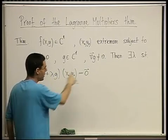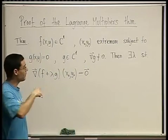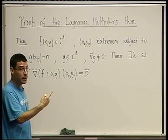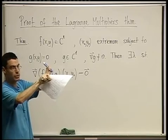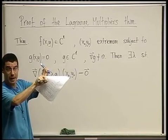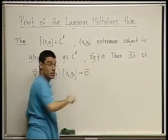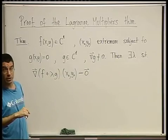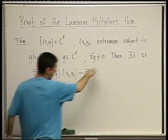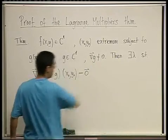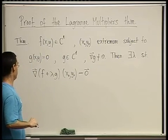We didn't mention this when we discussed the geometric meaning. Remember the geometric drawing where the two gradients were parallel? Well, if the gradient of g is zero, that argument isn't going to work. And this plays a role in this proof as well. So we want to prove this.